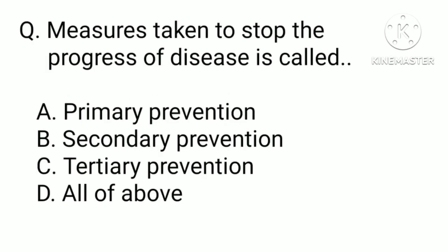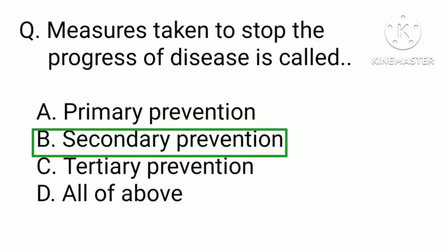Measures taken to stop the progress of disease are called: a) primary prevention, b) secondary prevention, c) tertiary prevention, or d) all of the above. The correct answer is b) secondary prevention.